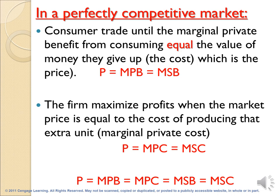The consumer will be satisfied when the price equals the marginal private benefit, which equals the marginal social benefit. The producer or the firm will have the maximum profit when the market price equals the cost of producing an extra unit, or equals the marginal private cost. So the firm or the producer will be satisfied when the price equals marginal private cost, which equals marginal social cost.